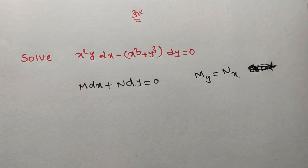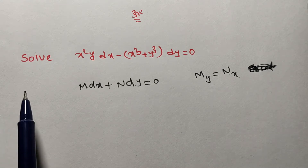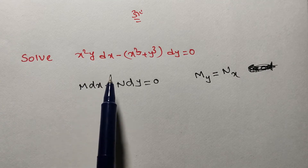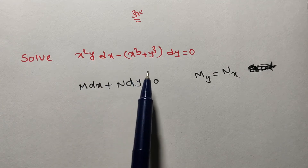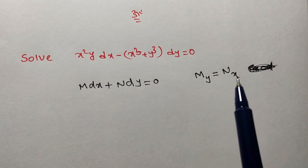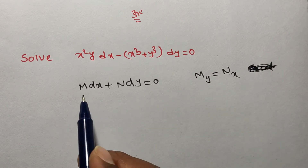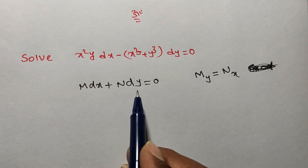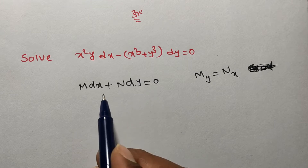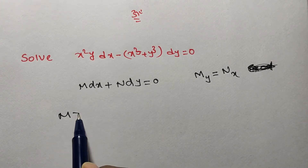Hi friends, welcome back to Team Education. In this video we are solving a problem on first order and first degree differential equations. The given problem is: solve x²y dx − (x³ + y³) dy = 0. By observation, this problem is in the form of M dx + N dy = 0, where M is the dx coefficient.